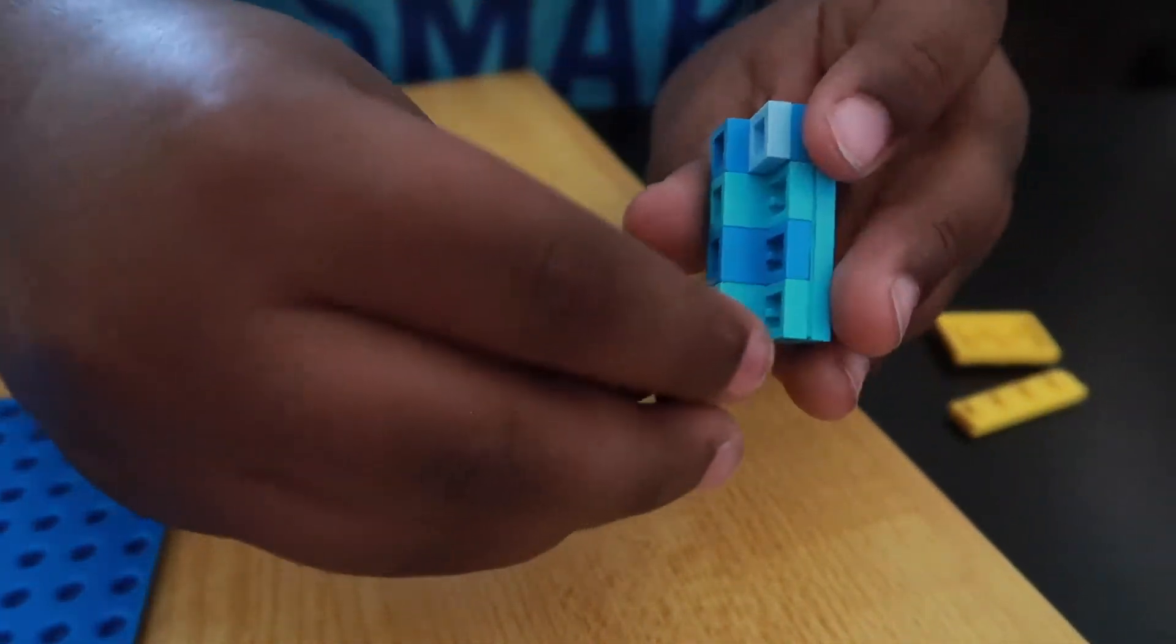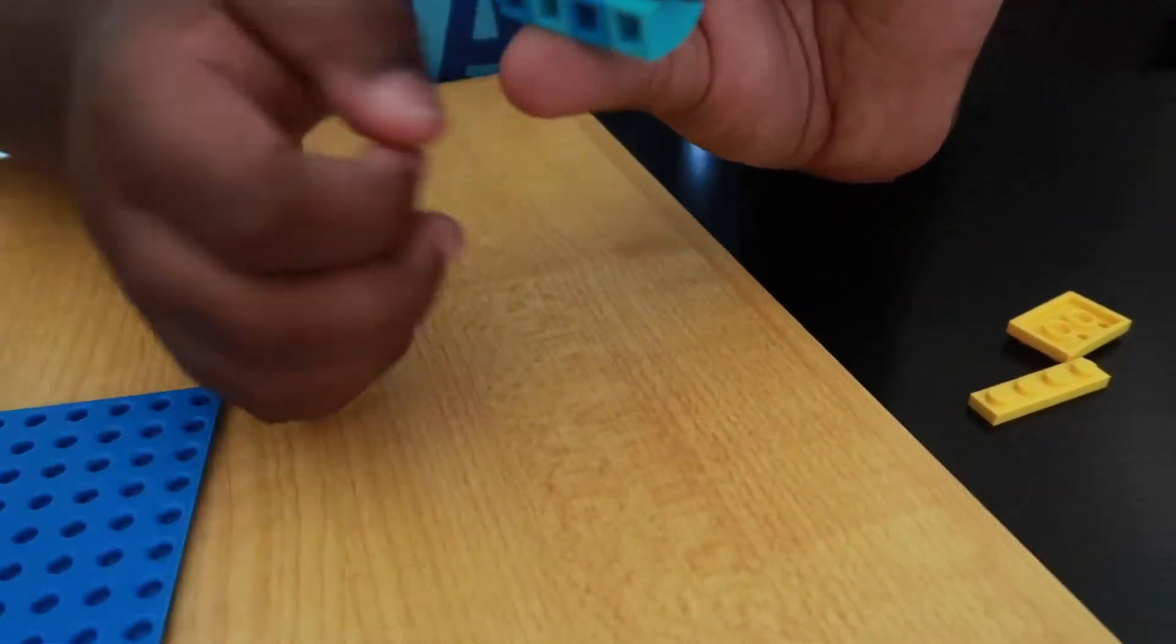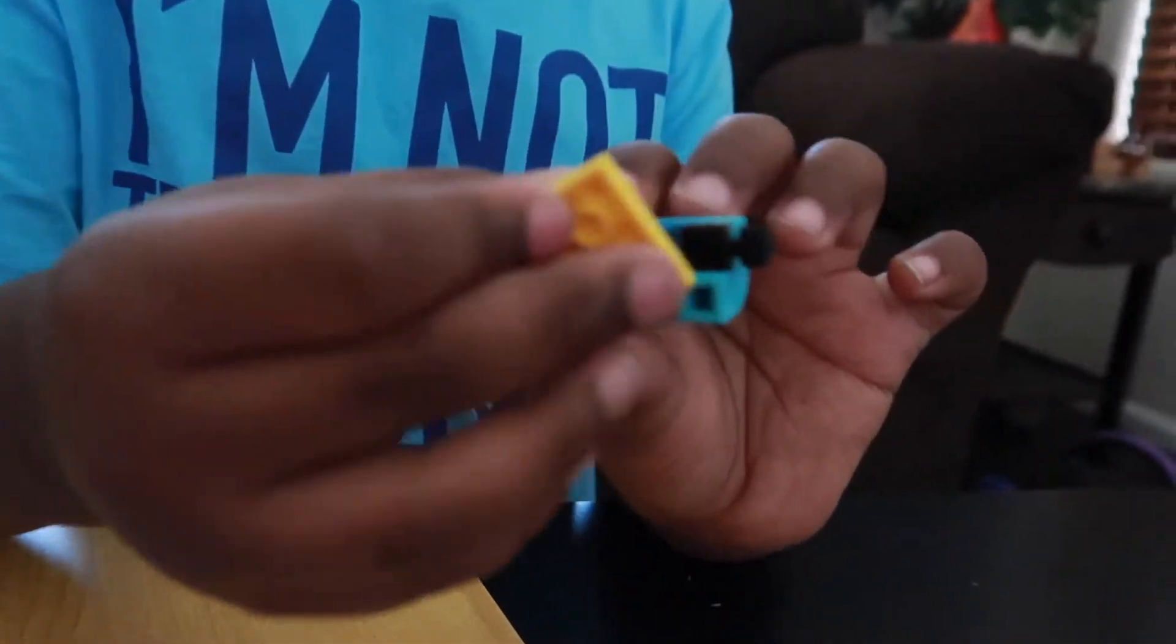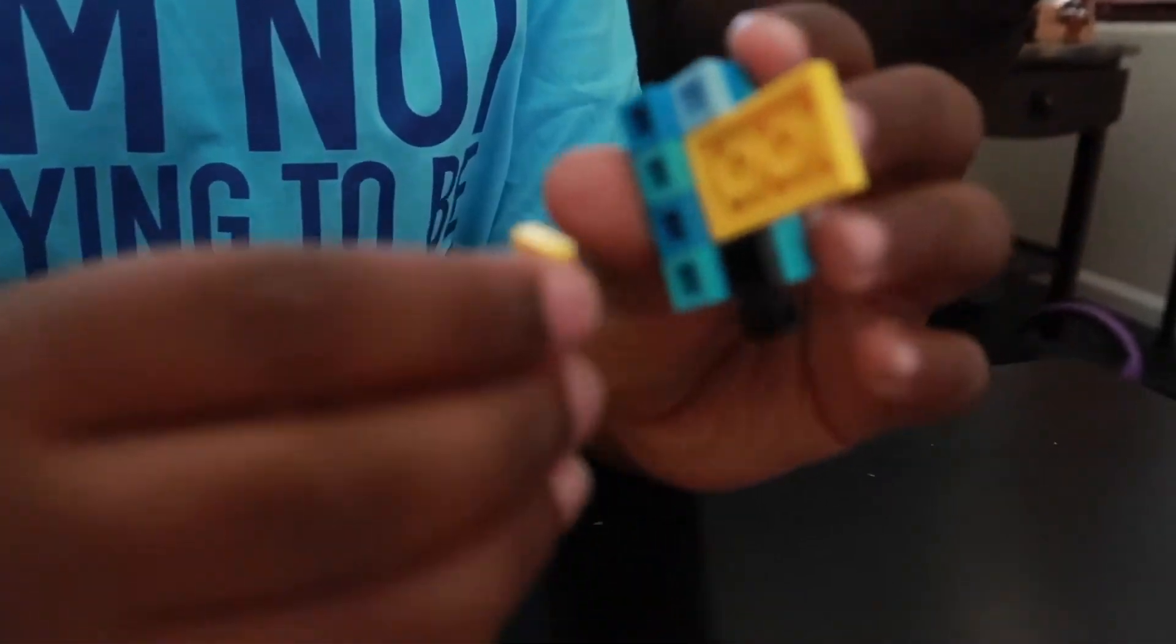And then I'm going to put one by one right here and put this to the edge so there's a little one by two space. That's for the toilet paper. I'm going to set it right here.